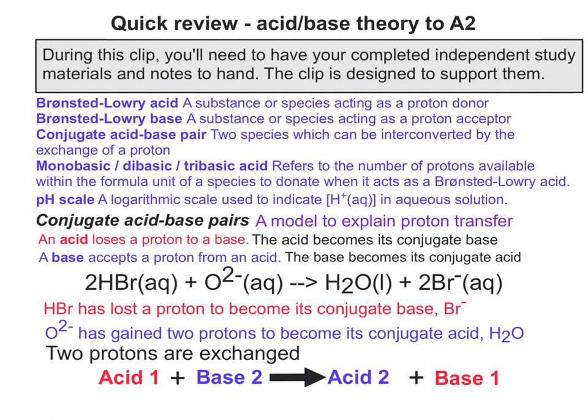HBr has lost a proton to become its conjugate base, Br-. But this has to happen twice because O2- has a 2- charge. So O2- has gained two protons to become its conjugate acid, H2O. We still have proton exchange happening, but it just has to happen twice to balance the equation.